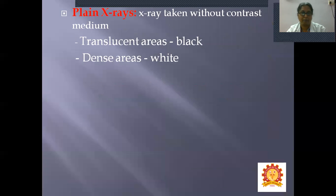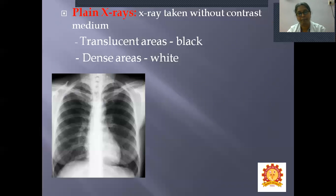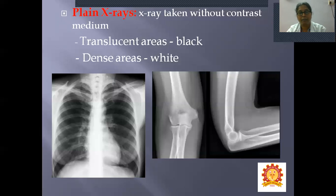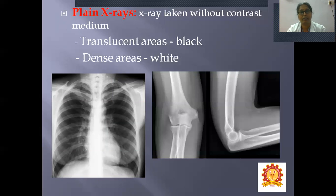Types of radiograph: there are two types — plain X-ray and contrast X-ray. In a plain X-ray, X-rays are taken without injecting a contrast medium; translucent areas appear black whereas dense areas appear white. You can see a chest X-ray and an elbow joint in both anterior and lateral views as examples of plain X-rays.